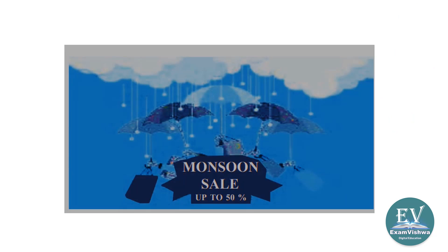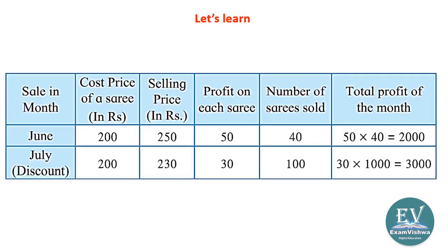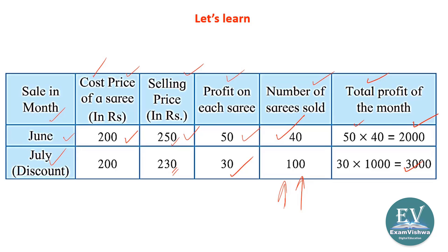Now we will look at a real situation — a monsoon sale, up to 50 percent discount. Consider a sale table: cost price of a sari, selling price, profit per sari, number of saris sold, and total profit. In June, the price of a sari is 200, selling price is 250, profit is 50, 40 saris sold, total profit is 2000. In July, with a discount, the selling price drops from 250 to 230, so profit is 30. But sales increase — with the discount, total profit is 3000, which is more. So the shopkeeper actually benefits from giving a discount.